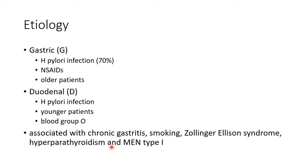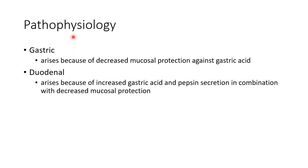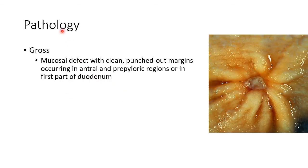Peptic ulcer disease is also associated with chronic gastritis, smoking, Zollinger-Ellison syndrome, hyperparathyroidism, and multiple endocrine neoplasia type 1. Gastric ulcer arises because of decreased mucosal protection against gastric acid. Duodenal ulcer arises because of increased gastric acid and pepsin secretion in combination with decreased mucosal protection.